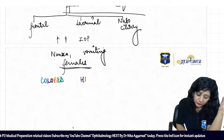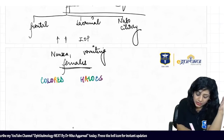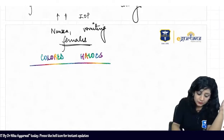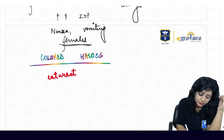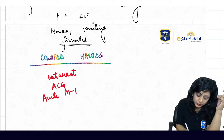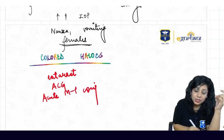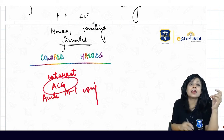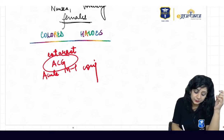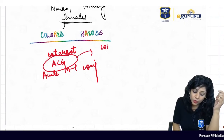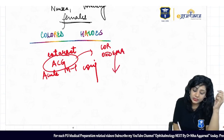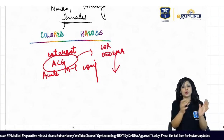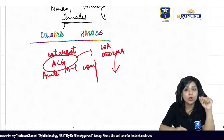An important feature is colored halos. The differential diagnosis of colored halos in ophthalmology includes cataract, angle closure glaucoma, and acute mucopurulent conjunctivitis. In glaucoma, the colored halos are due to corneal edema — because of the high pressure there is corneal edema, which also causes blurring of vision. So all the symptoms are correct except for pain in the occiput.